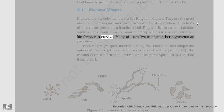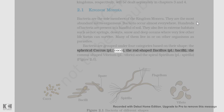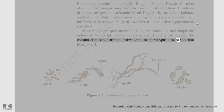Many of them live in or on other organisms as parasites. Bacteria are grouped under four categories based on their shape: the spherical coccus (pl. cocci), the rod-shaped bacillus (pl. bacilli), the comma-shaped vibrio (pl. vibrio), and the spiral spirillum (pl. spirilla) — as shown in Figure 2.1.